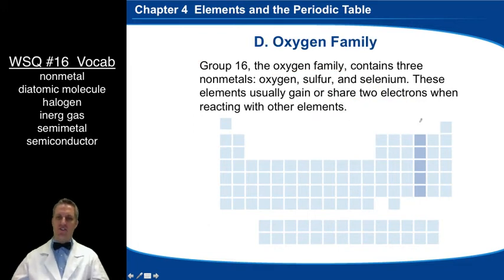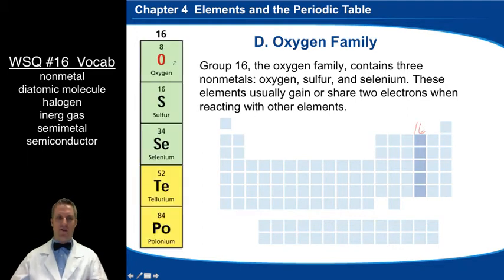Next group is the oxygen family. That's in family 16. The oxygen family contains three non-metals. The non-metals are oxygen, of course very important because oxygen is what we need to breathe. Sulfur, another very prevalent non-metal, and we find this a lot in the Earth's crust. And selenium.